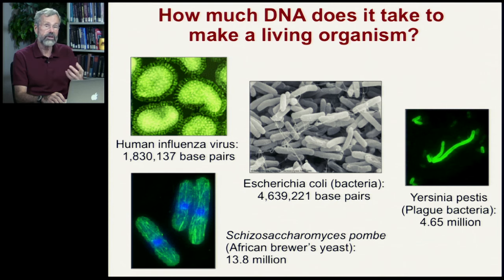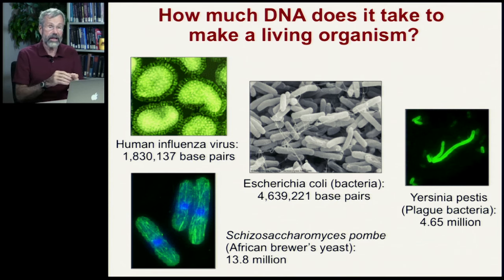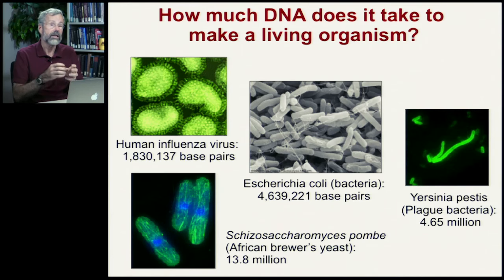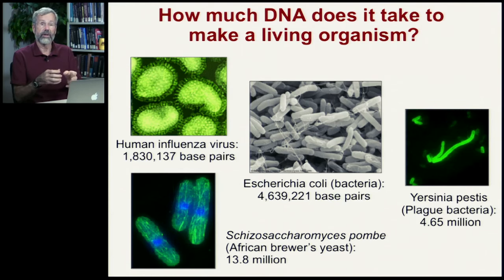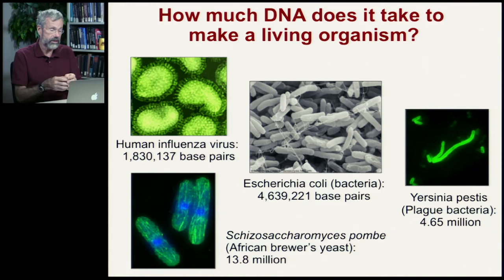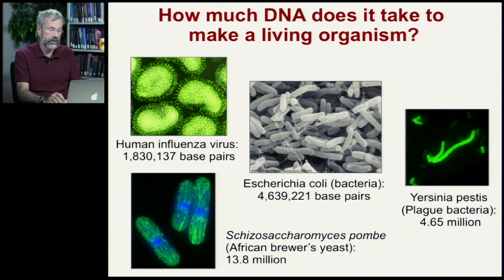Brewer's yeast is actually a far more complicated organism than bacteria. It's what's called a protist, and these have nucleated cells and quite a big genome: 13.8 million base pairs compared to only about 4 million for simple bacteria.